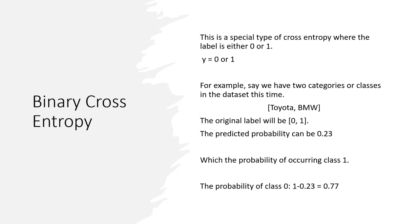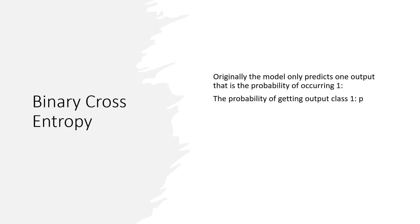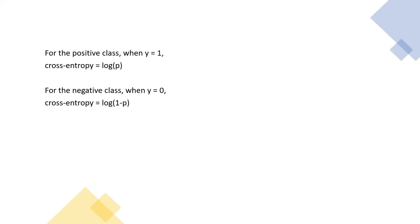Now let's see how we can get the binary cross-entropy loss or the cost function for a binary classification problem. So let's denote the probability of getting output class 1 as p and the probability of occurring output class 0 is 1 minus p. So for the positive class when y equals to 1, the cross-entropy becomes log p, and the cross-entropy loss becomes negative y times log p. And you saw this in the multi-class classification just a few minutes ago.